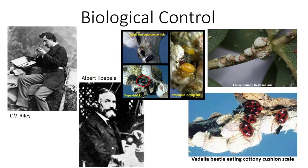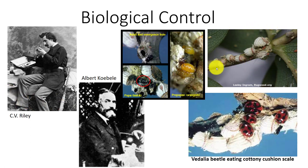A classic example of successful biological control is the Vedalia beetle for control of cottony cushion scale in citrus. In 1868, the cottony cushion scale was introduced to California from Australia and became a serious pest of citrus and ornamentals.